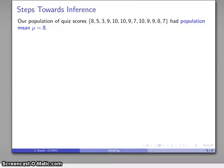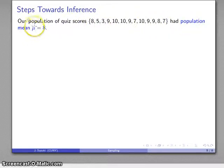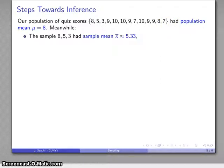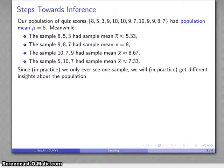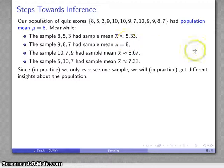Now, what can we do with that? The idea is we'd like to find information about the population based on our sample. The population has a mean — a population mean — and we'll use the Greek letter mu. We can compute that population mean, which turns out to be 8. My sample of the first three quiz scores had a sample mean of about 5.33. My second sample, the last three scores, had a sample mean of 8. Other samples had different sample means. In practice, we only ever see one of these samples.